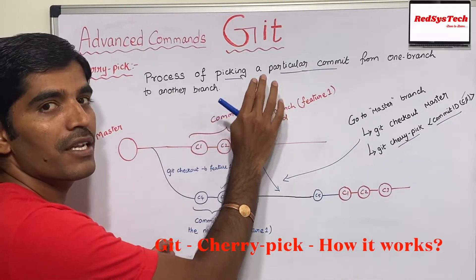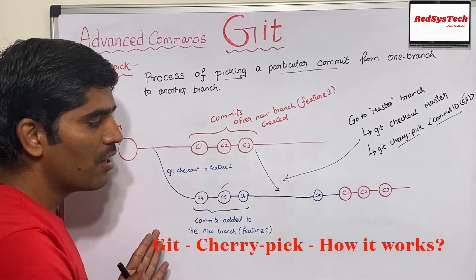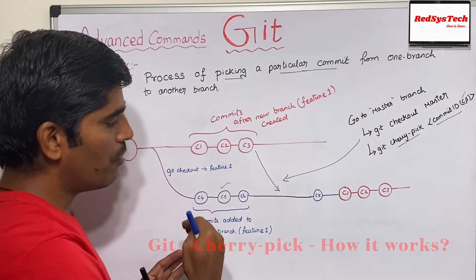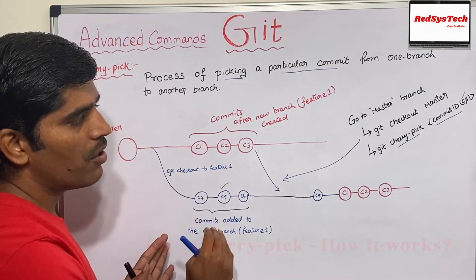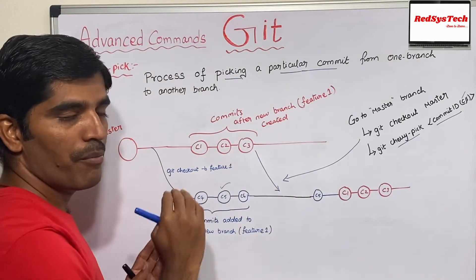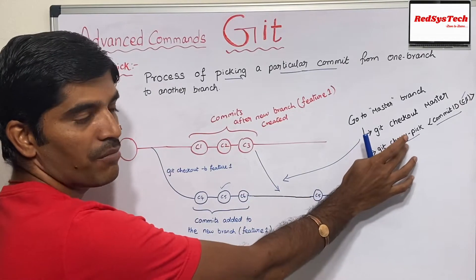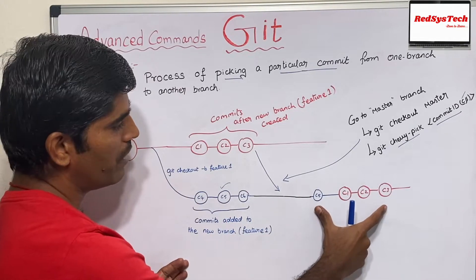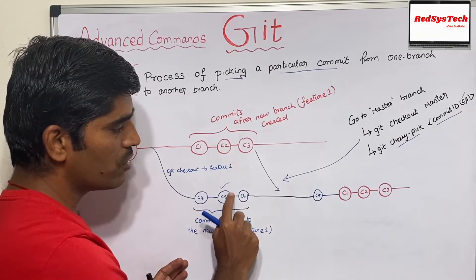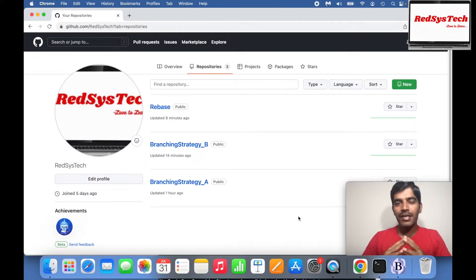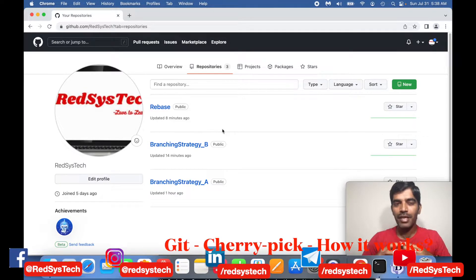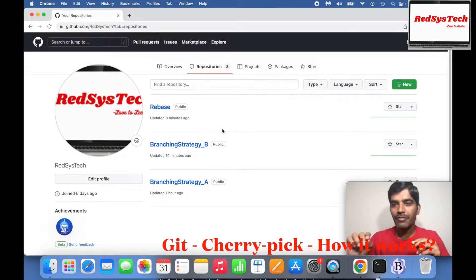Cherry pick is the process of picking a particular commit from one branch to another branch. It's not about more than one commit — it's about one particular commit at a time. If I want to get C5, I have to cherry-pick that commit ID. If I want another commit, I have to cherry-pick another ID. So if I want to move from feature branch to master branch, make sure you go to the master branch first and then use the cherry-pick command with the commit ID. With rebase, it takes a sequence of commits from one branch to another, but cherry pick is very specific — it picks one particular commit from one branch to another branch.